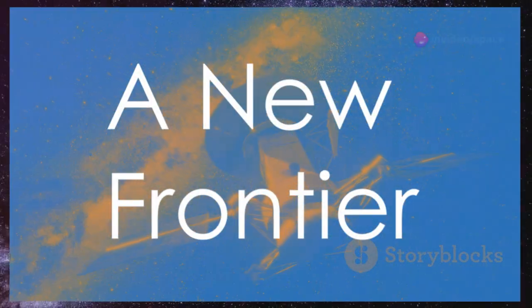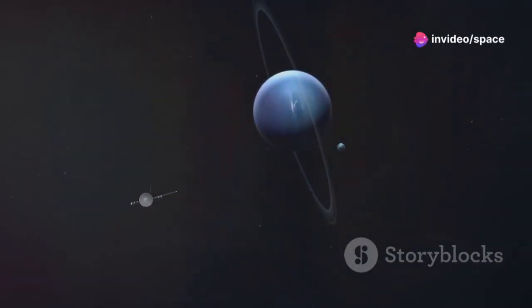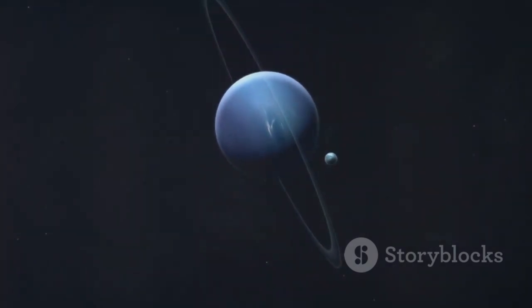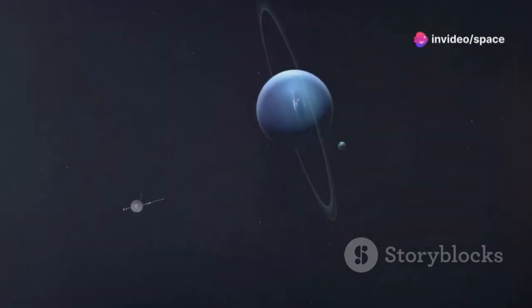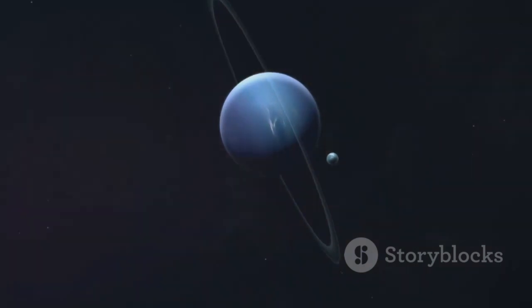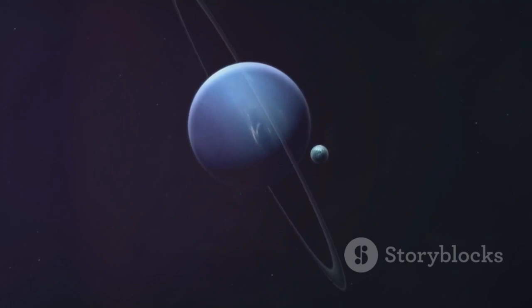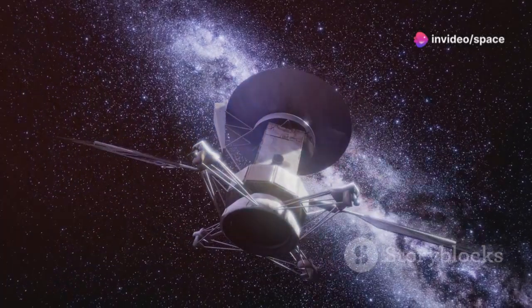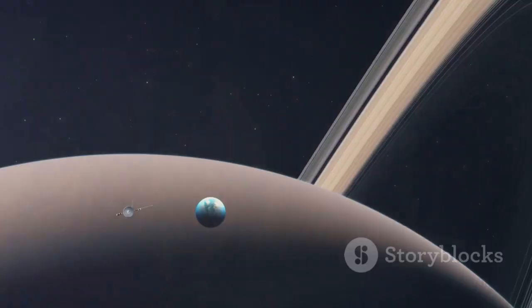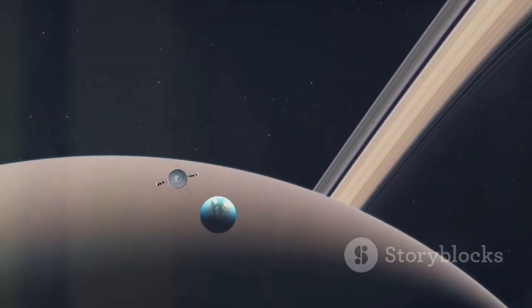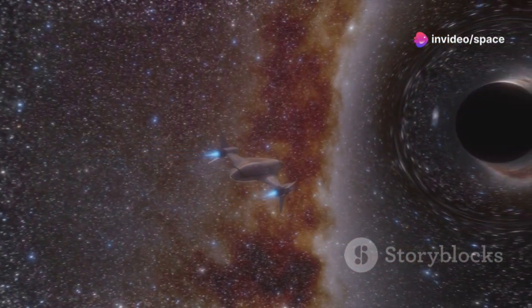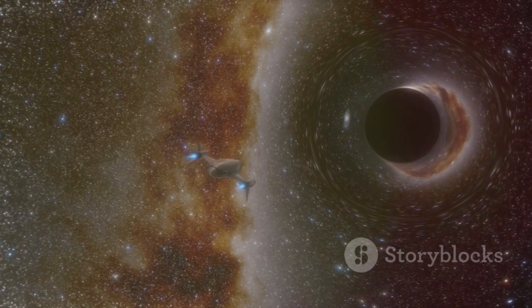After completing their planetary encounters, the Voyager probes continued their journey outward, eventually crossing the boundary that marks the edge of our solar system and the beginning of interstellar space. This boundary, known as the heliopause, is the point where the solar wind gives way to the interstellar medium, the gas and dust that fill the space between the stars. Voyager 1 crossed the heliopause in August 2012, becoming the first human-made object to enter interstellar space. Voyager 2 followed suit in November 2018.